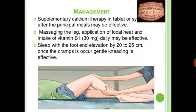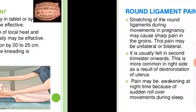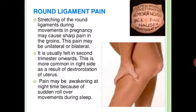Calcium in meals, massaging the legs, application of local heat, and intake of vitamin B1 30 mg daily may be effective. Sleep with the foot end elevated by 20 to 25 cm. Once a cramp occurs, gently kneading the affected muscles is helpful. Next is round ligament pain: stretching of the round ligament during movement in pregnancy may cause sharp pain in the groin.